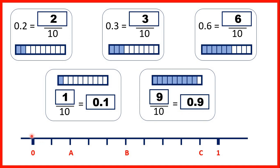Now at the bottom here we have a number line. We have 0, and then we have 1, 2, 3, 4, 5, 6, 7, 8, 9, 10 lines from 0 to 1. So each of these lines must represent one tenth.